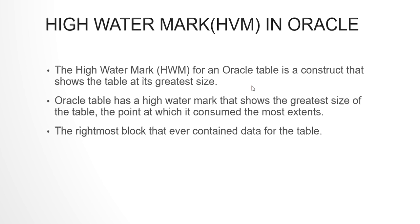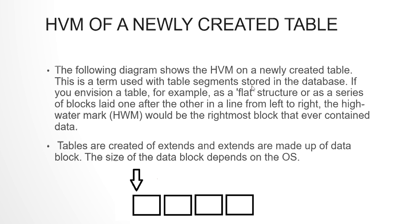The high watermark may be pointing to a block which does not contain any data at the present moment, but which in the past had data for that table. The rightmost block, or the maximum number of blocks, whichever ever contained data for a table, has a high watermark. The following diagram shows the HWM on a newly created table — the HWM is set to zero because there is no data. If we envision a table as a flat structure or a series of data blocks laid one after the other from left to right, then the high watermark would be the rightmost block that ever contained data.